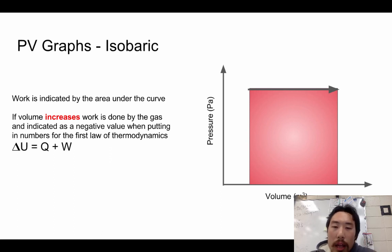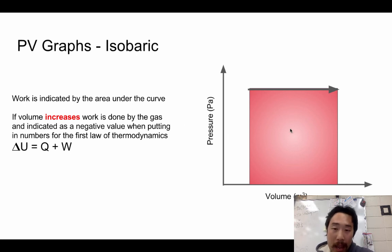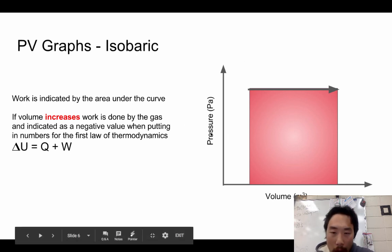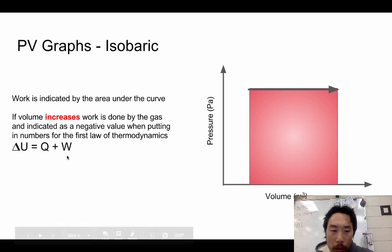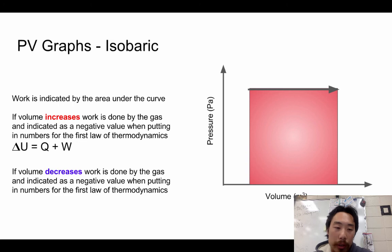Because the first law describes what's happening to the gas: delta U = Q + W. If the gas is doing the work, the work has to be put in as a negative, and the work done in this expanding process is put in as a negative value.